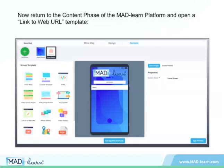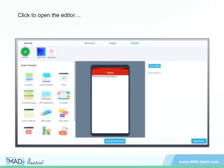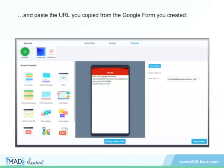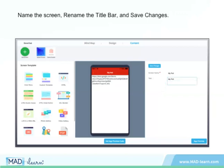Now return to the Content phase of the MadLearn platform and open a Link to Web URL template. Click to open the Editor and paste the URL you copied from the Google Form that you created. Name the screen, rename the title bar, and save the changes.